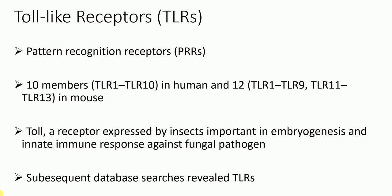Good morning everyone, welcome to my lecture on toll-like receptors. What are these toll-like receptors, or simply TLRs? Toll-like receptors are pattern recognition receptors — they recognize pathogen-associated molecular patterns, which are highly conserved in bacteria, viruses, fungi, and parasites. They recognize specific molecular patterns present in those infectious agents. So far, 10 members of toll-like receptors have been discovered in humans and 12 in mice, except TLR10.